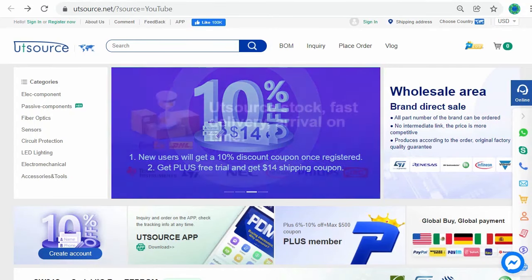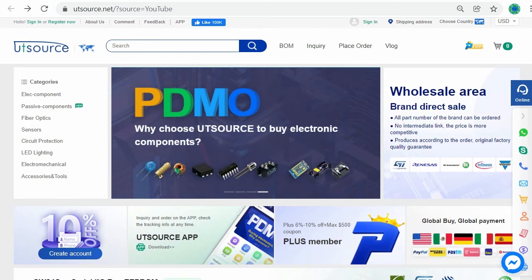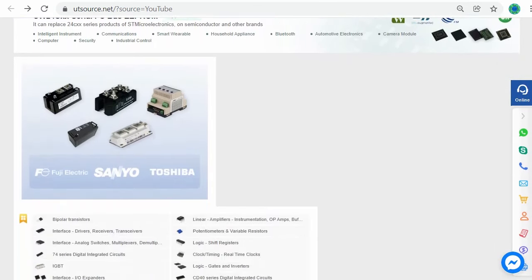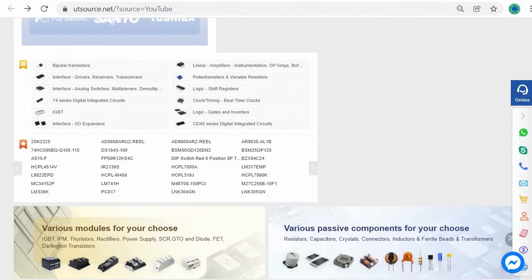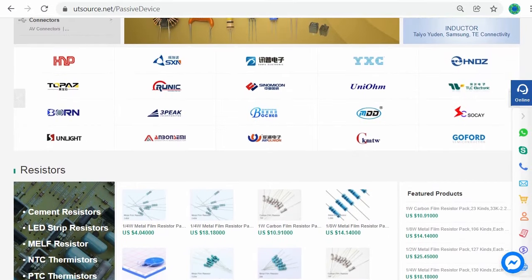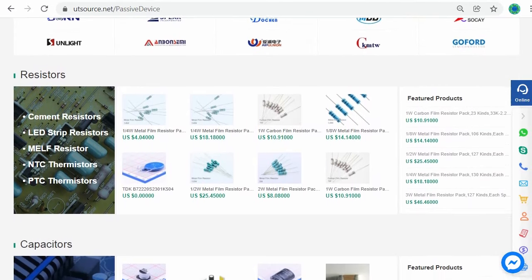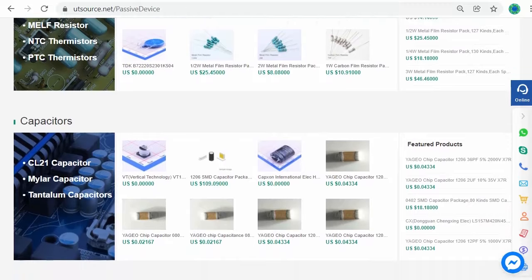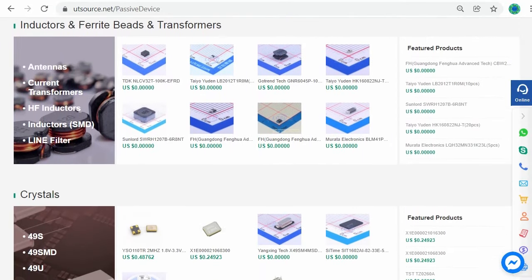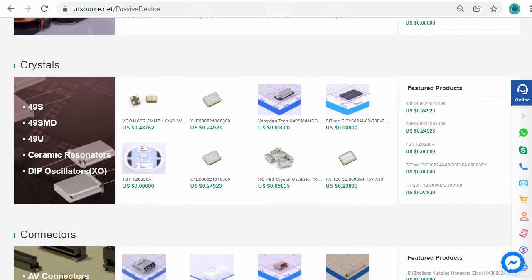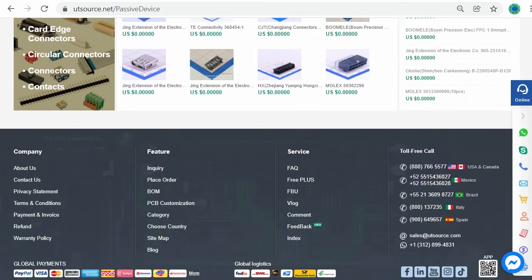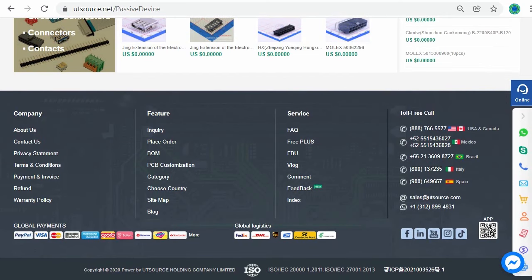UTSource.net is a professional purchasing website in the field of electronic components. UTSource.net provides different types of electronic components such as IC chips, capacitors, transistors, resistors, LEDs, diodes, sensors, and electrical and electronic tools. UTSource.net is the most complete and professional electronic components mall. If you want to visit UTSource.net and buy electronic components, the link is in the description.